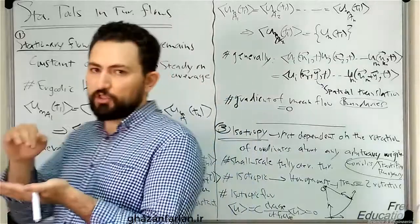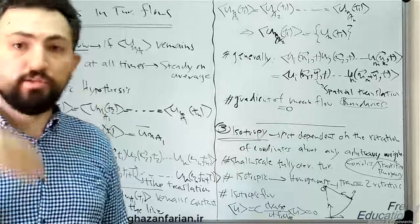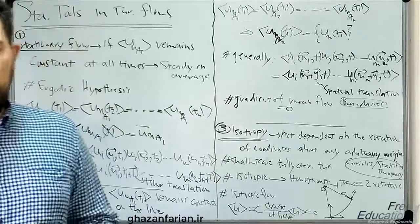near the center line, the homogeneous presumption is valid. But near the boundaries or near the walls, the flow is inhomogeneous.